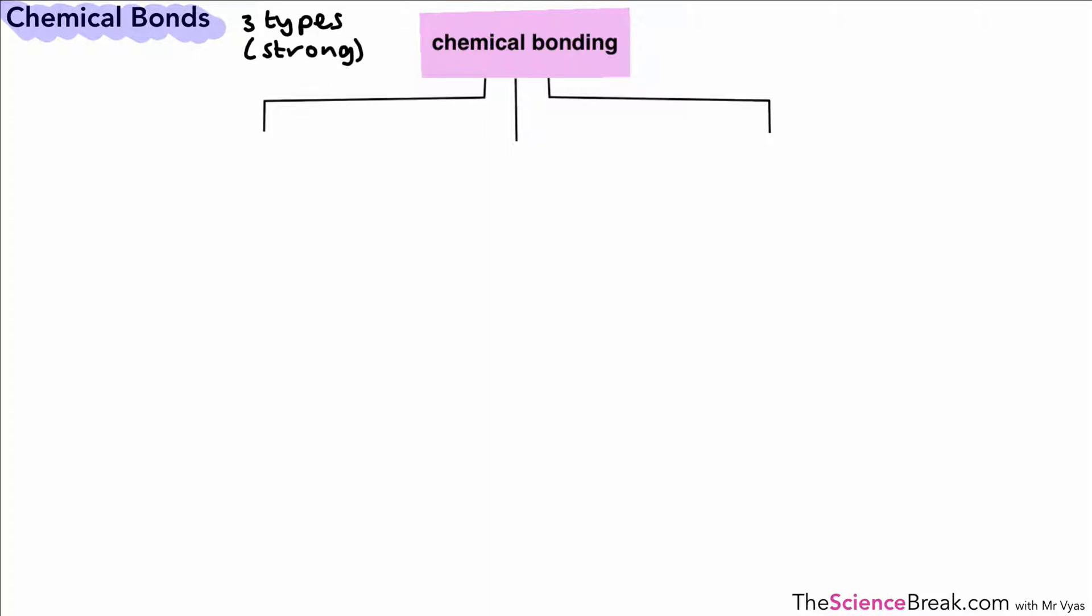The first one is called the ionic bond. This is a type of bond that happens between metal and non-metal elements.